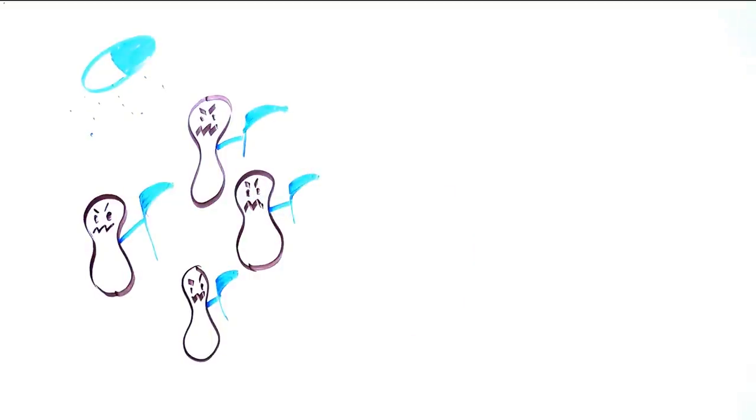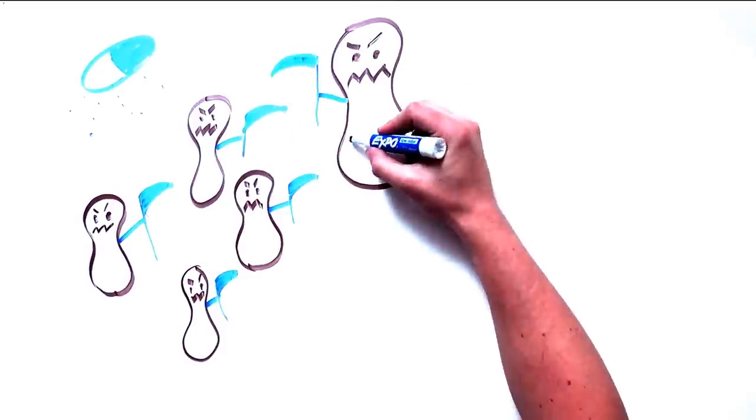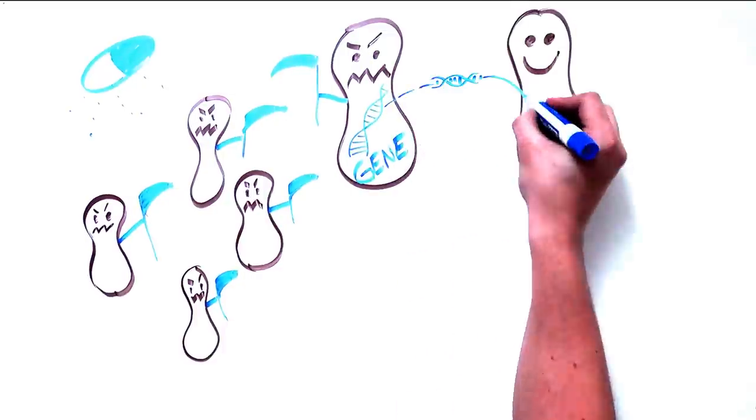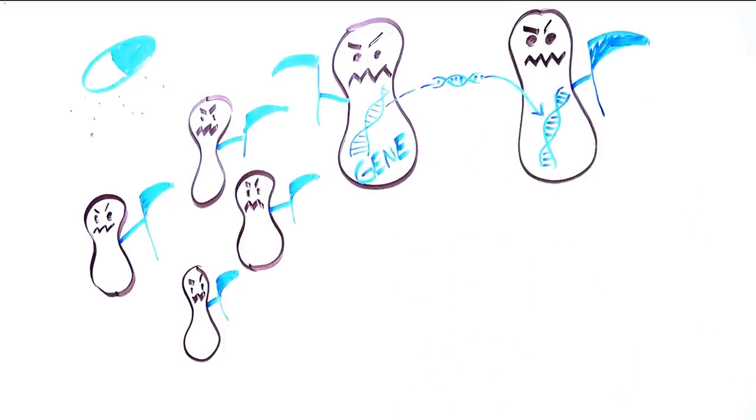But how this resistance spread surprised everyone. Scientists discovered that the genes causing antibiotic resistance can be transferred from one bacteria to another, and some genes can even confer resistance to multiple antibiotics.